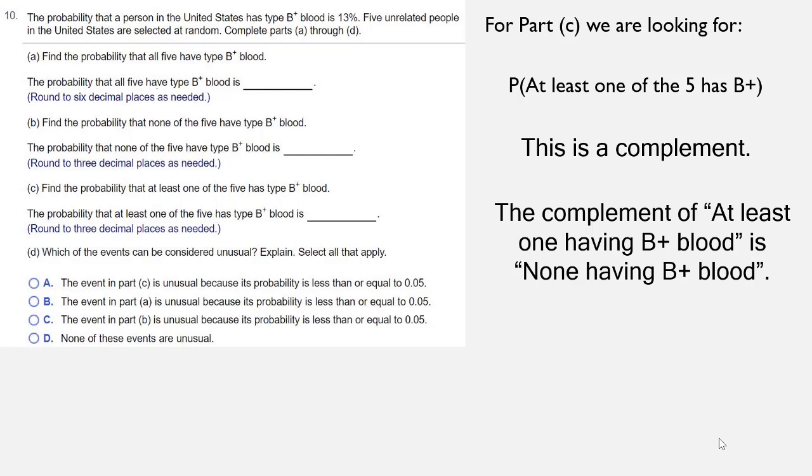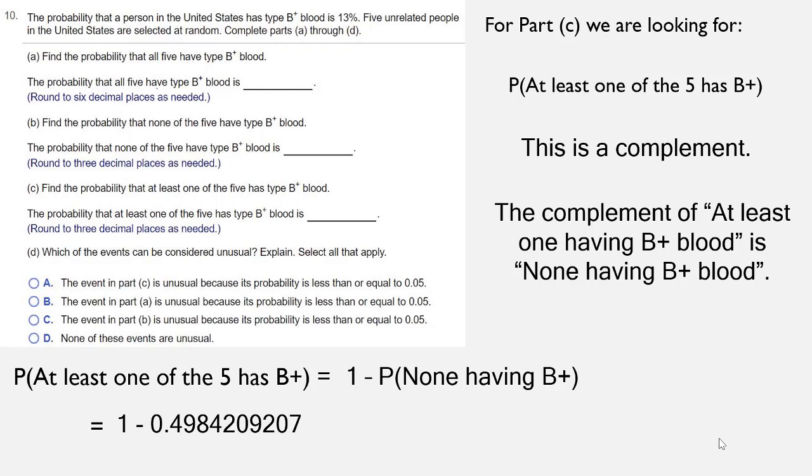So the probability of at least one having B positive blood would be 1 minus the probability of none having B positive blood, which is 1 minus 0.4984209207.